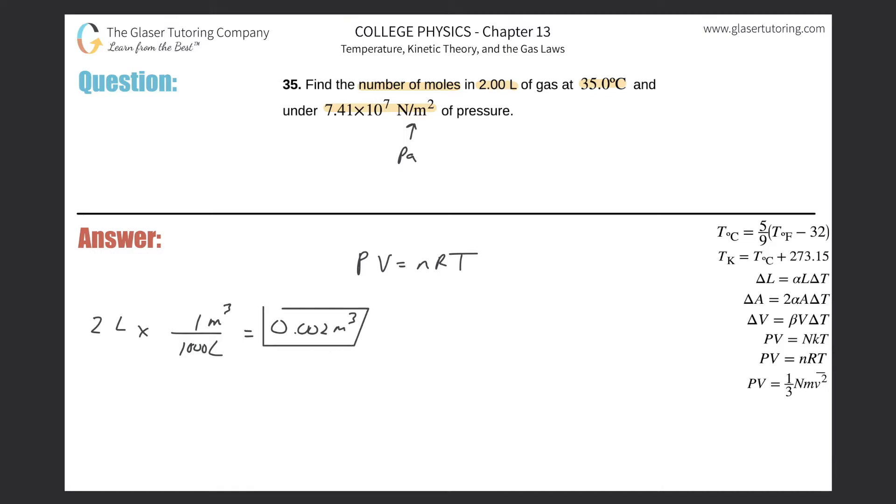The n represents the number of moles, so that's what we're looking for. The R is a constant. If you're using pascal for pressure and cubic meter for volume,